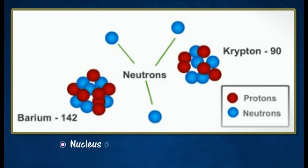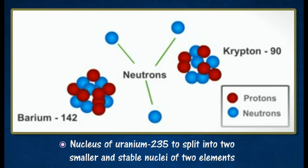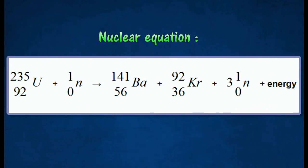This causes the nucleus of uranium-235 to split into two smaller and stable nuclei of two elements, often barium and krypton. The fission process can be written as follows.